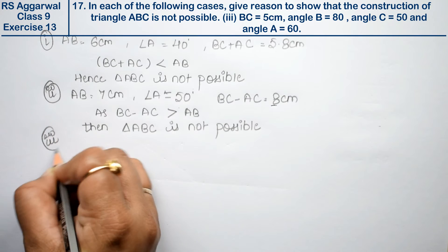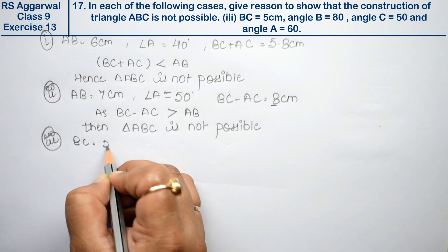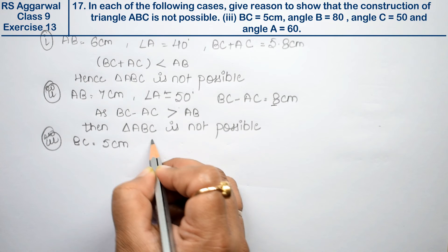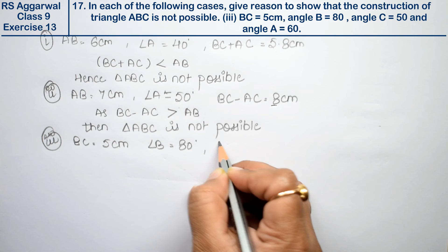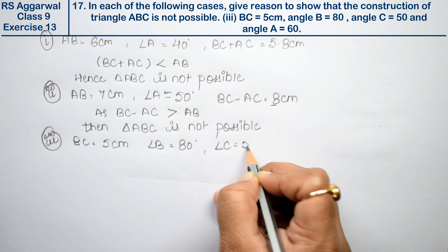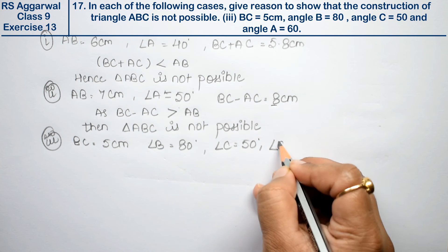Third part: BC is 5 cm, angle B is 80 degrees, angle C is 50 degrees, and angle A is 60 degrees.